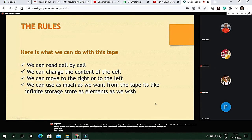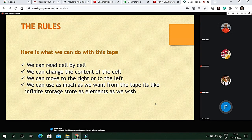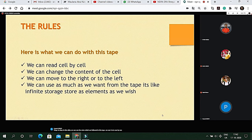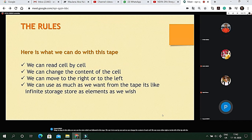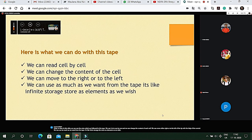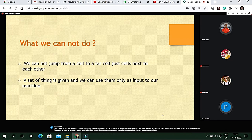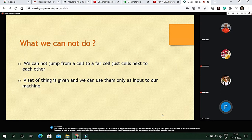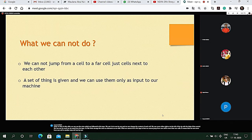In this slide we can see the rules which are followed in this tape. We can read it one by one and we can also change the content of itself. We can move either right or to the left of the tape with the help of the controller. We can use as much as we want from the tape. It's like infinite storage. What we cannot do in this tape is that we cannot jump from one cell to more than two cells. We can move from one cell to another cell one by one. A set of things is given and we can use them only as input to our machine.